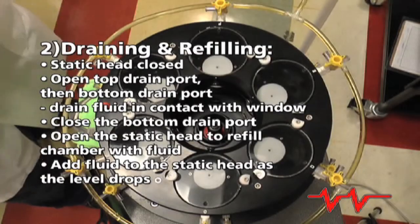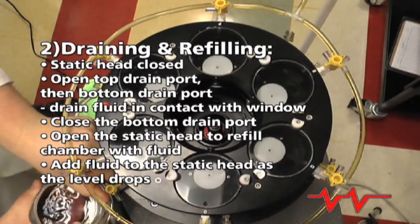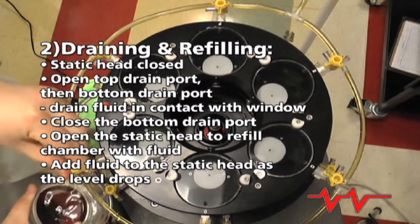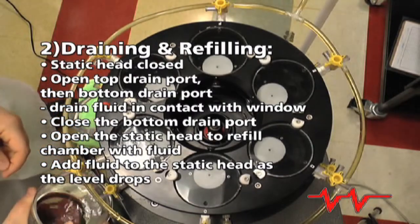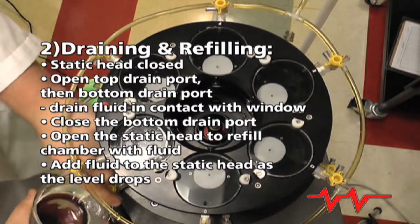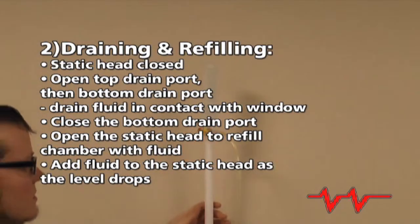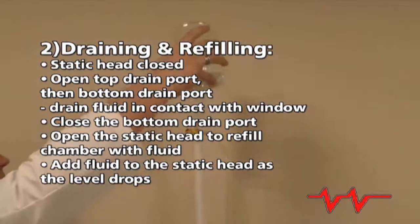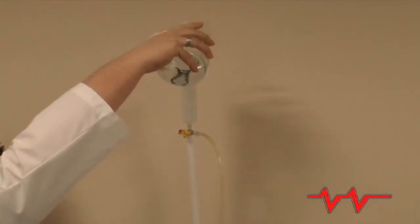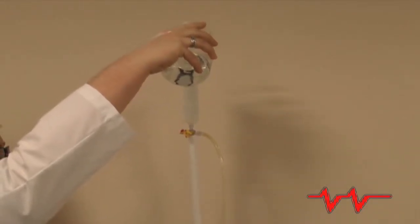With the static head closed, open the top drain port, then the bottom drain port to drain enough fluid so that only air is in contact with the window. Then close the bottom drain port and open the static head again to allow the fluid to refill the chamber. You will need to add fluid to the static head as the level drops to fill the chamber.